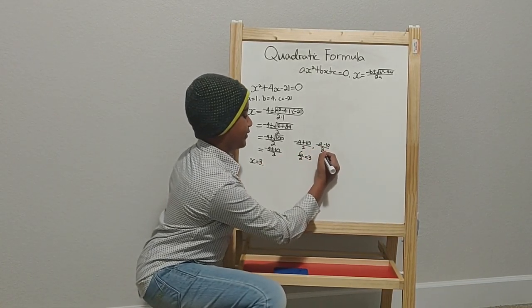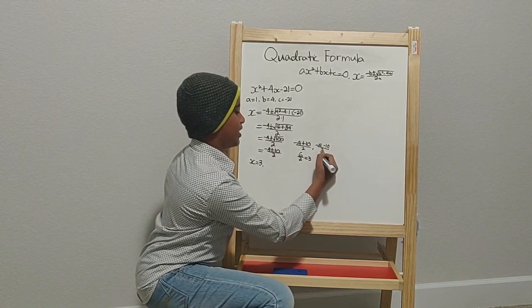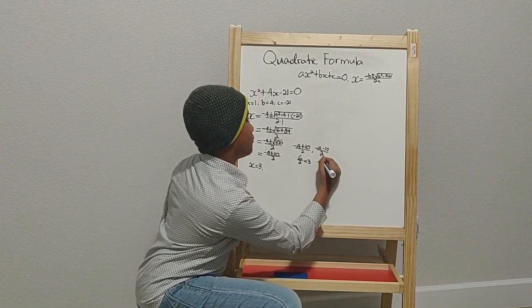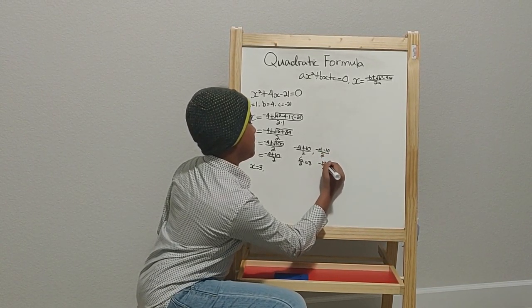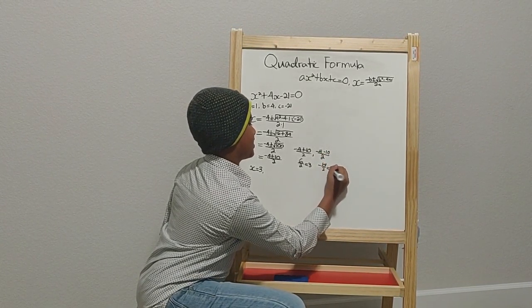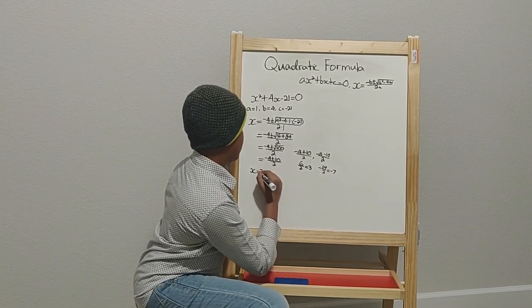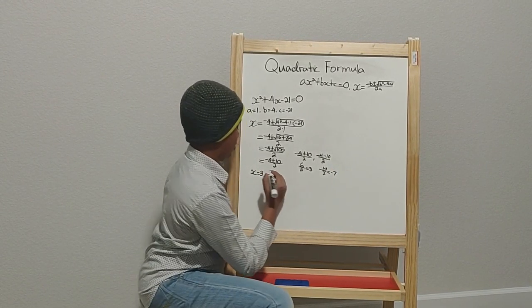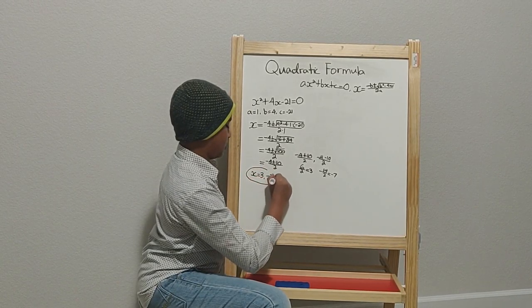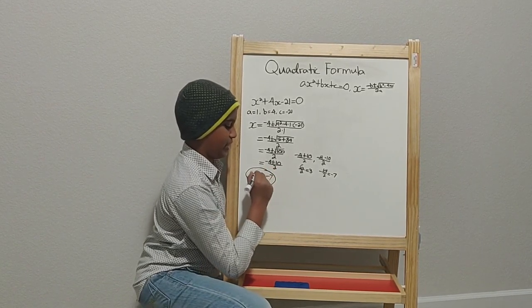And then let's solve for this one. Negative 4 minus 10 will be negative 14 over 2, which then will equal negative 7. And then x will equal 3 and negative 7, and this will be your final answer.